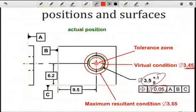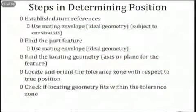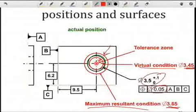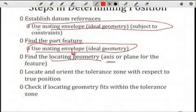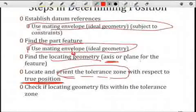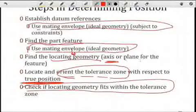The steps in determining the position of the actual feature are: first, establish the datum features using mating envelopes subject to constraints; second, find the part feature using the mating envelope with no constraints; third, find the locating geometry — such as an axis or plane — derived from the mating envelope; fourth, position and orient the tolerance zone at true position using the basic dimensions from the design spec; and fifth, check whether that locating geometry falls within the tolerance zone over the entire length of the feature.